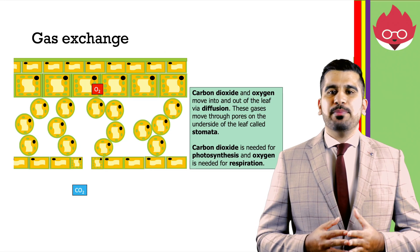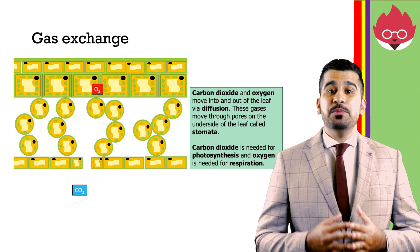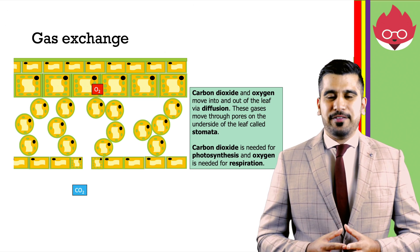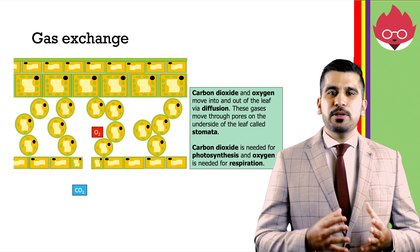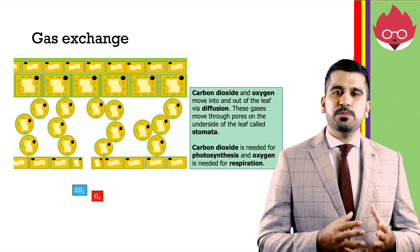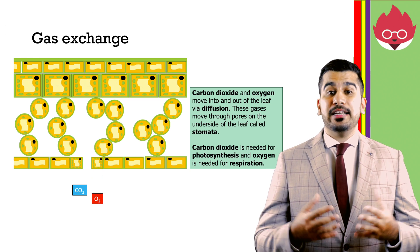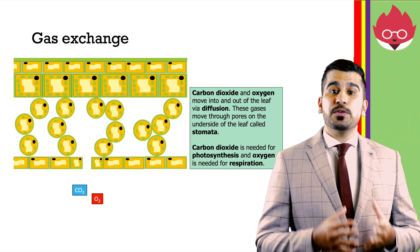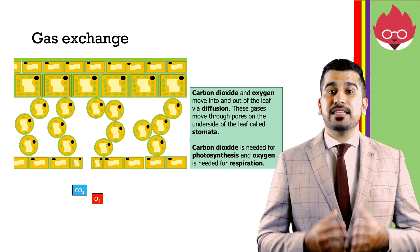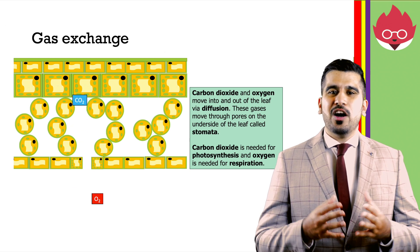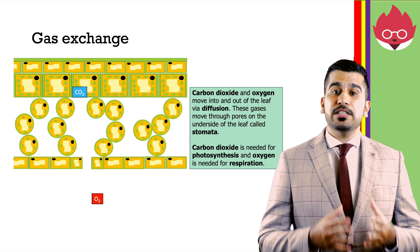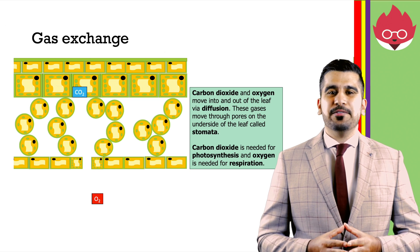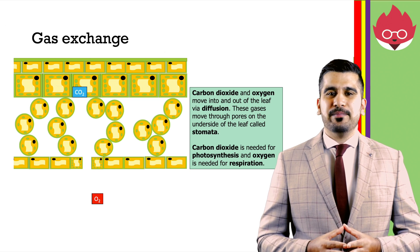Gas exchange in plants involves the movement of carbon dioxide and oxygen in and out of a plant. Carbon dioxide and oxygen move into and out of the leaf via diffusion. These gases move through pores on the underside of the leaf called the stomata. Carbon dioxide is needed for photosynthesis, and oxygen is needed for respiration.